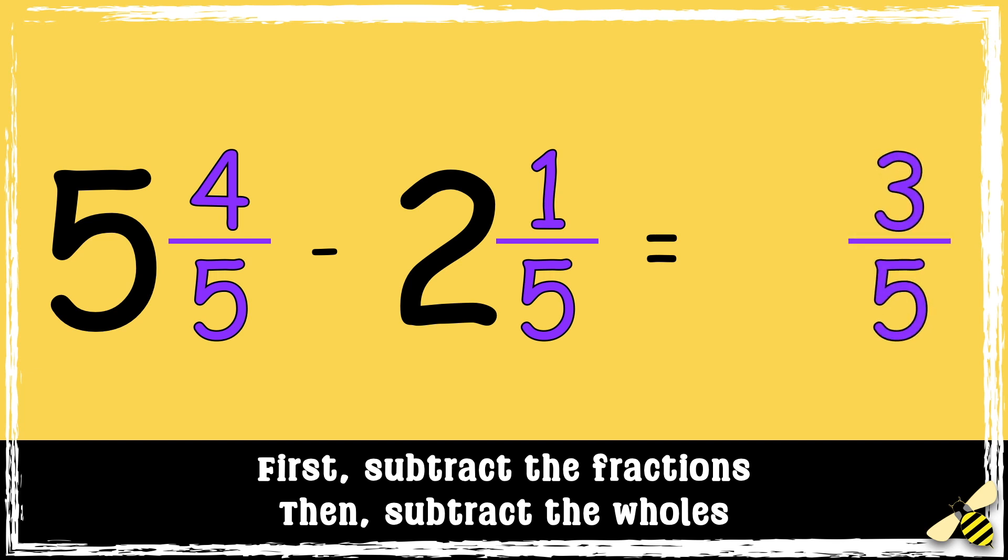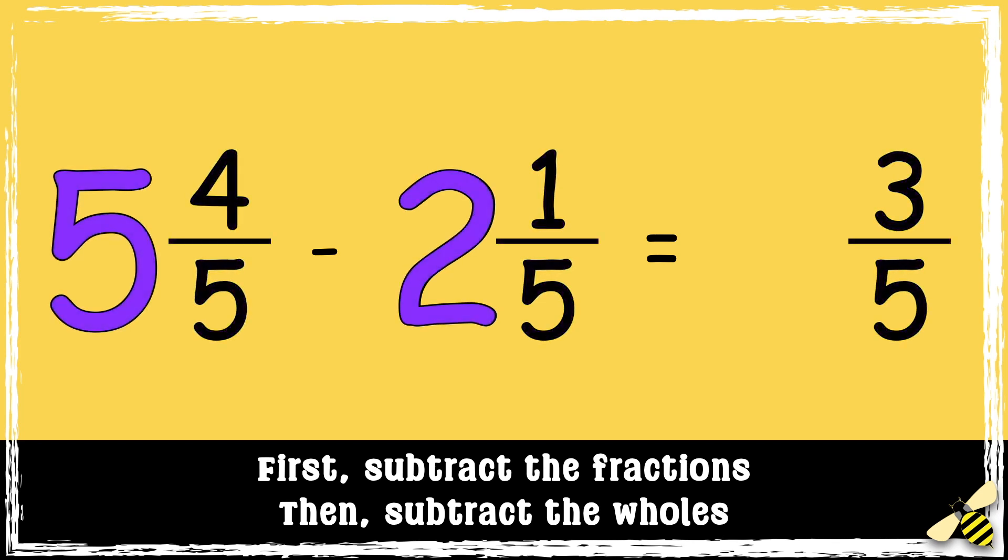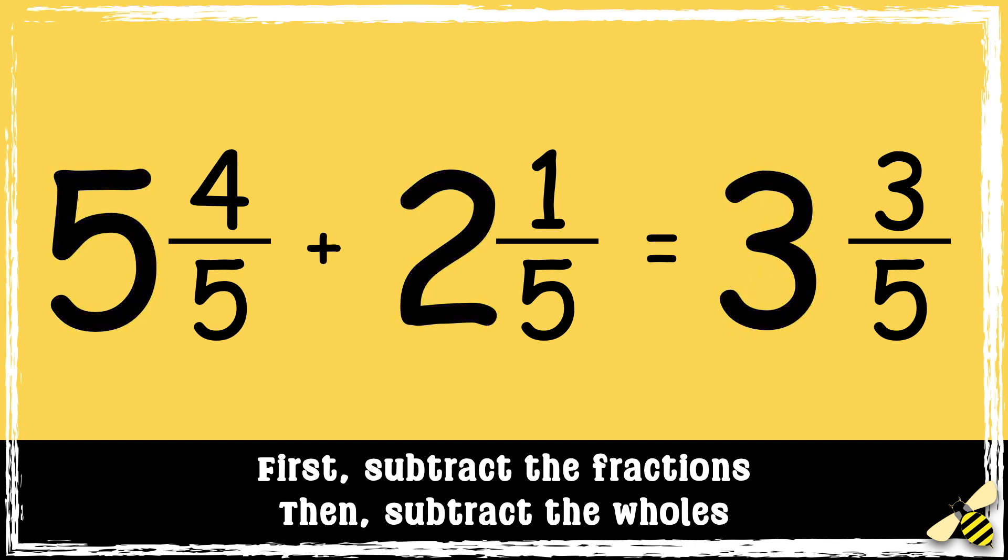Then we subtract the whole numbers: five take away two equals three. So the answer is three and three-fifths.